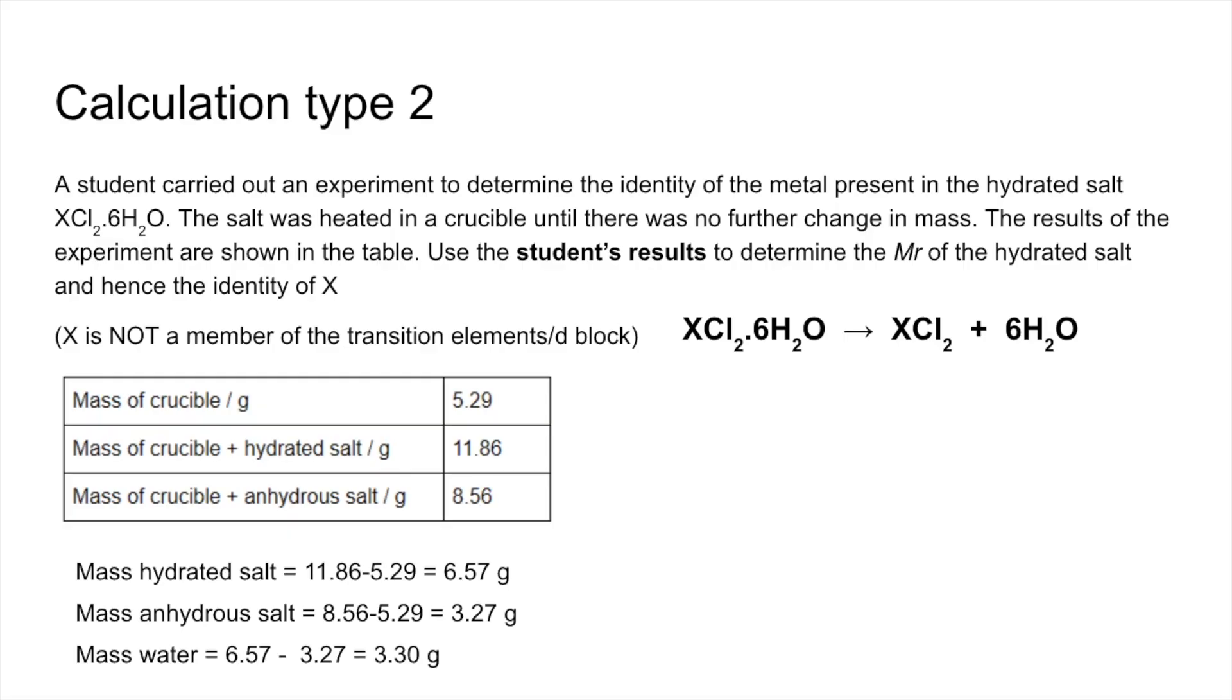So that comes out at 0.183 moles, mass over MR to get those moles. We're now going to use the mole ratio in this equation to work out the moles of this we must have had. So that's going to be a sixth of 0.183, so that comes out at 0.0305.